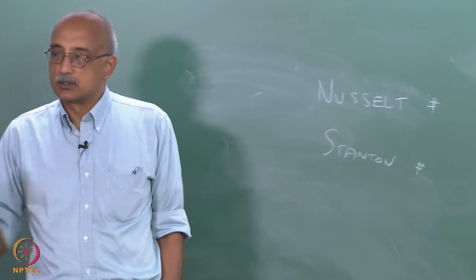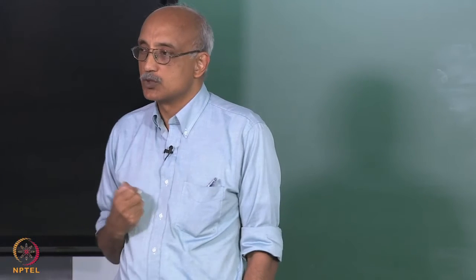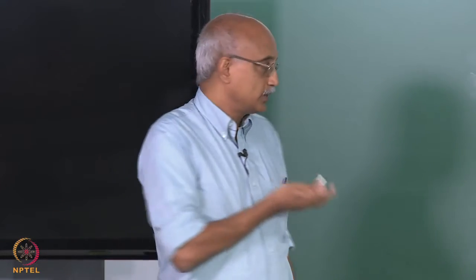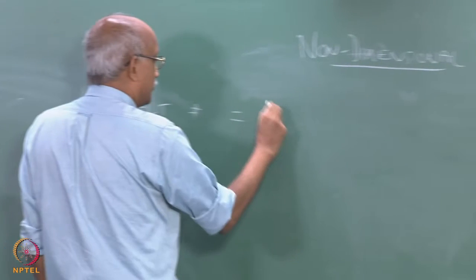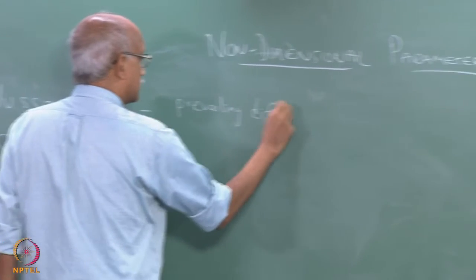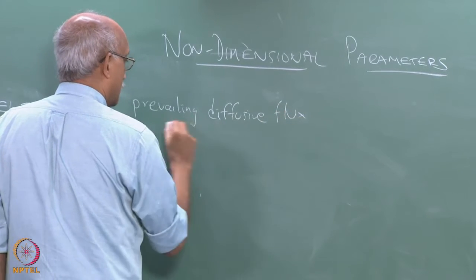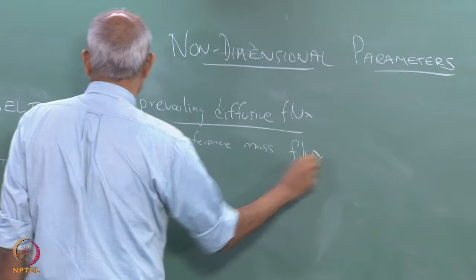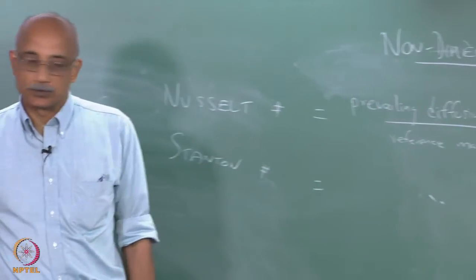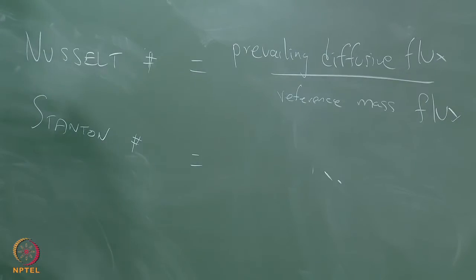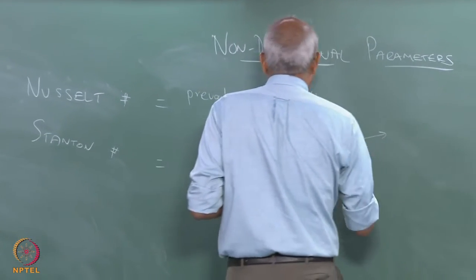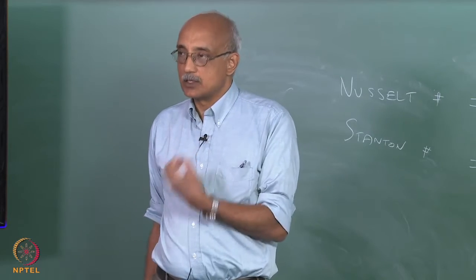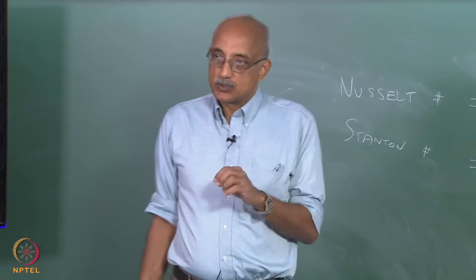The difference between the two is the denominator — what you use as your reference mass flux. In both cases the numerator is the prevailing diffusive flux. In the case of the Nusselt number, the reference mass flux refers to a diffusive flux driven by a concentration gradient. Whereas in the case of a Stanton number you use a convective flux as your reference flux.